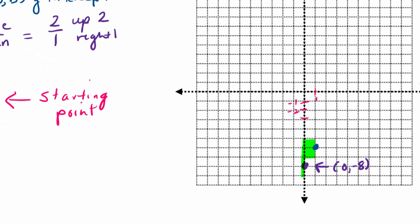Now we repeat this process to get more points so they line up. From our next point, go up 2 and then over to the right 1, and put another point there. We keep using our slope: up 2, right 1, up 2, right 1. Notice that our line is rising.